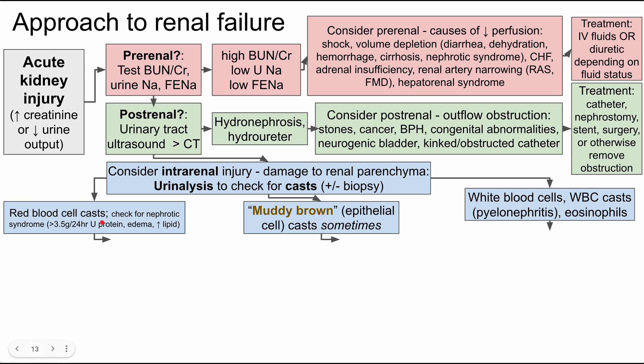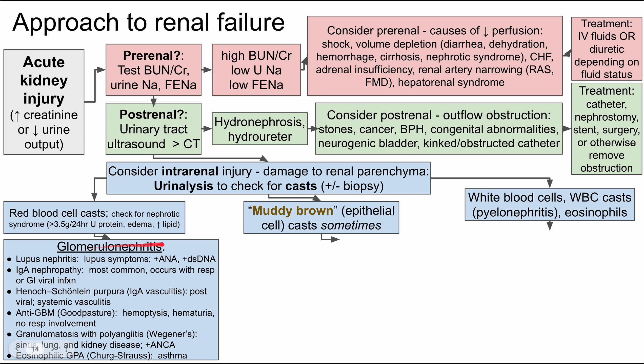Red blood cell casts are indicators of glomerulonephritis. When you see them, first check for nephrotic syndrome — defined as 3.5 grams of protein in the urine over 24 hours, often with hyperlipidemia and edema. If nephrotic syndrome is absent, consider glomerulonephritis. Common causes include lupus nephritis, which presents with lupus symptoms, positive ANA, and positive dsDNA. IgA nephropathy is common and often occurs three to five days after a respiratory or GI viral infection, presenting with bloody urine.